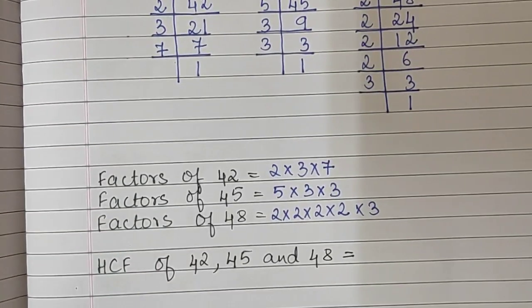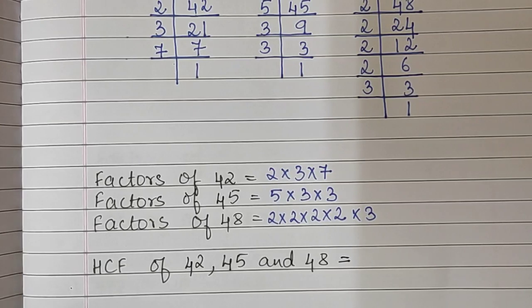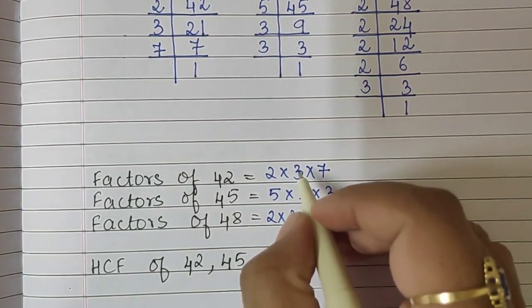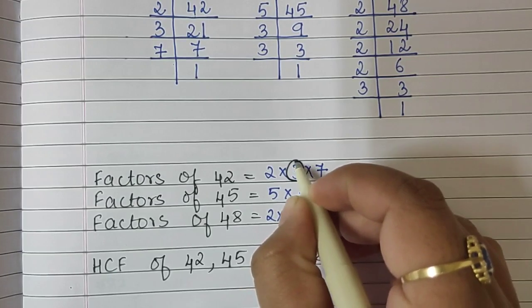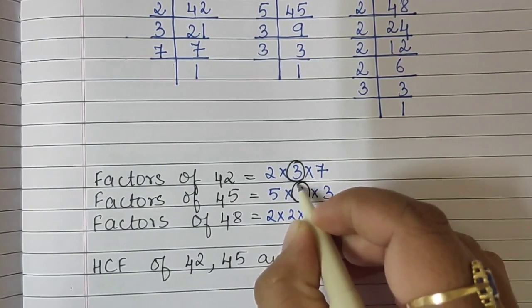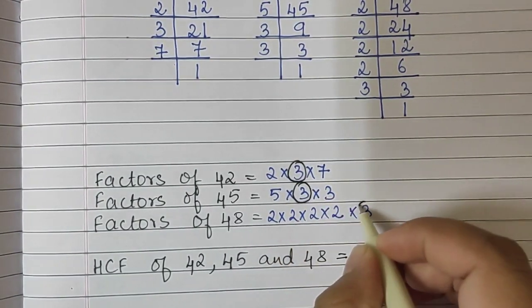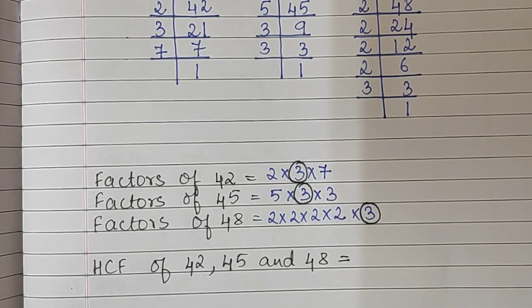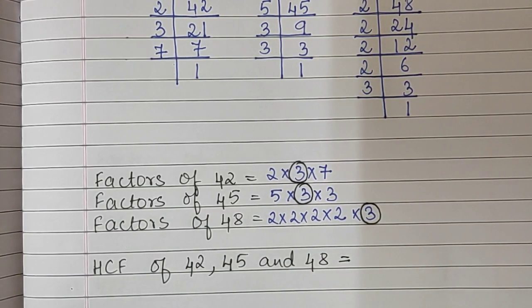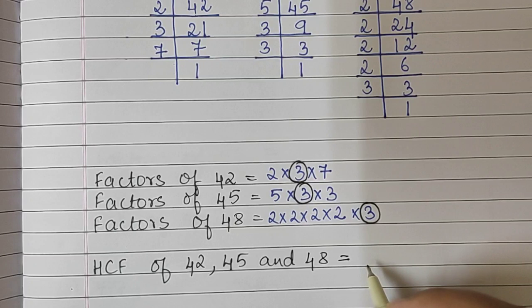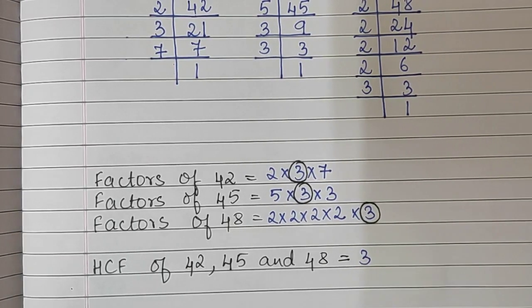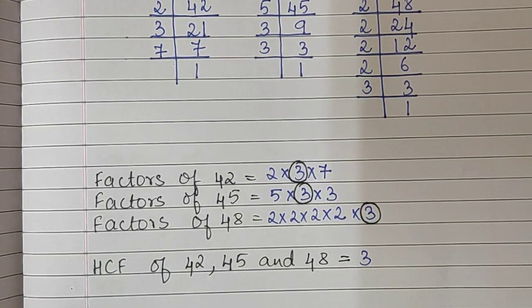Now we will find what is common in all these factors. The number 3 is common. Is there anything else common? No. So the HCF of 42, 45, and 48 is the number 3.